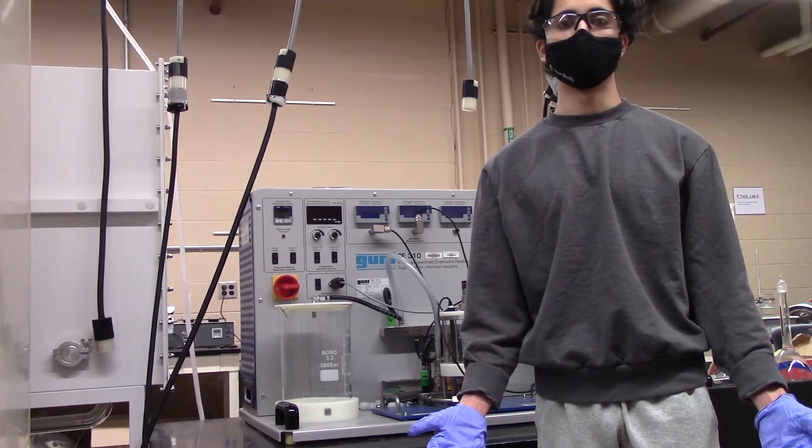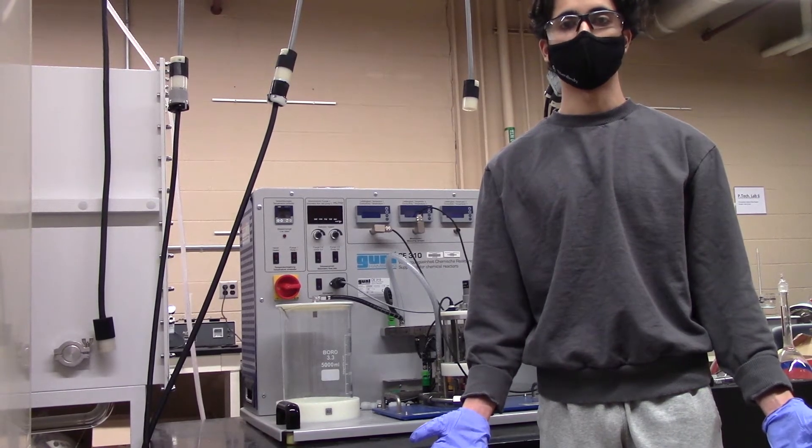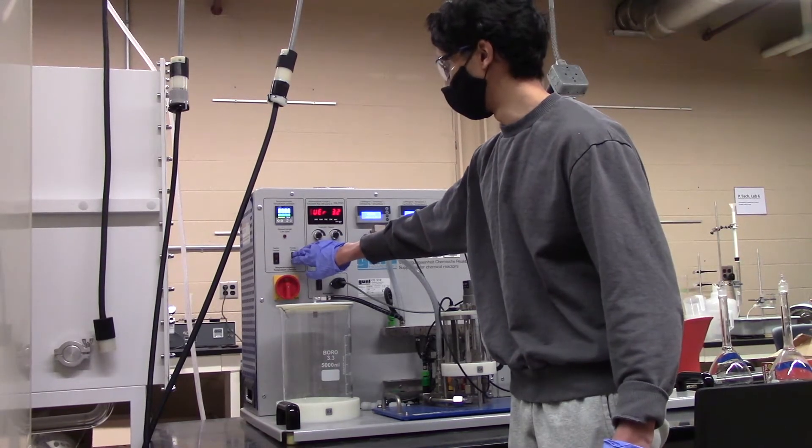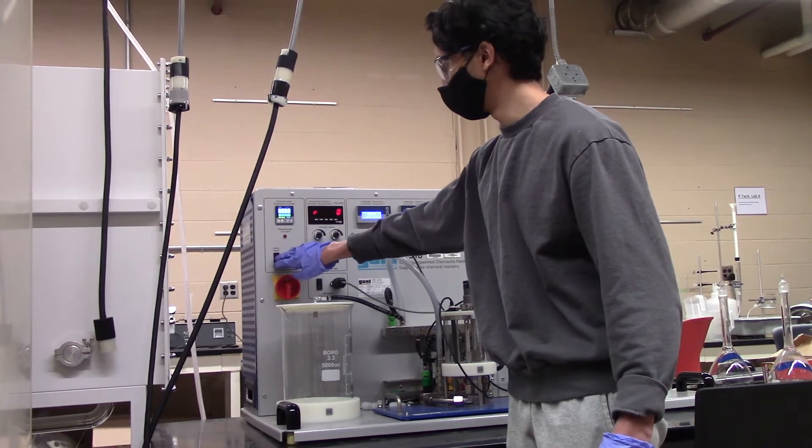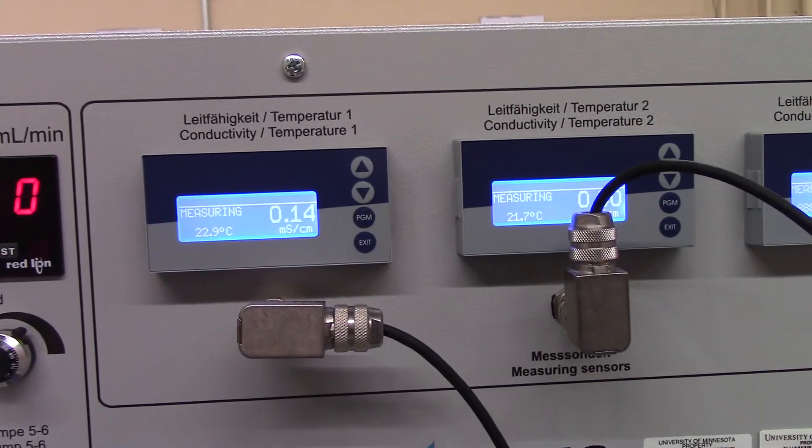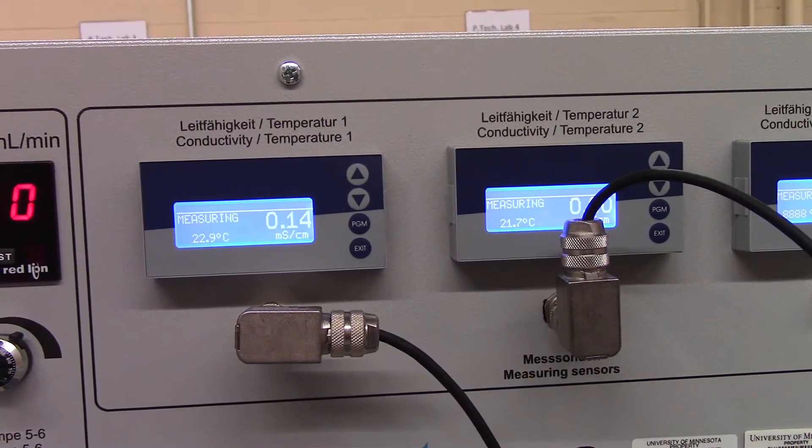Once you are done conducting all the preliminary steps, it is time to begin the experiment. Start by turning on the CSTR as well as pump 1 and the heater, setting it to your desired temperature. Then begin manually recording your temperature and conductivity values.